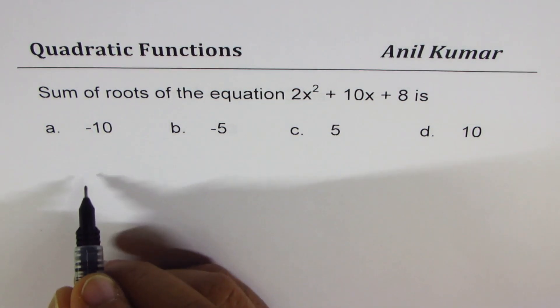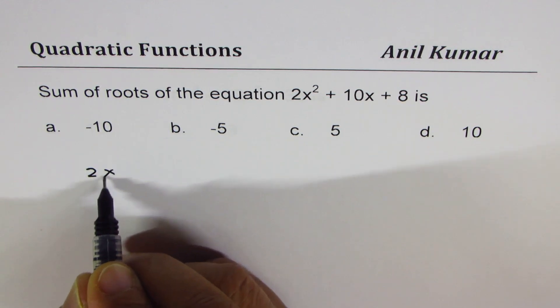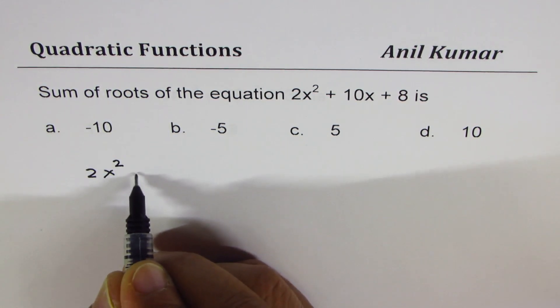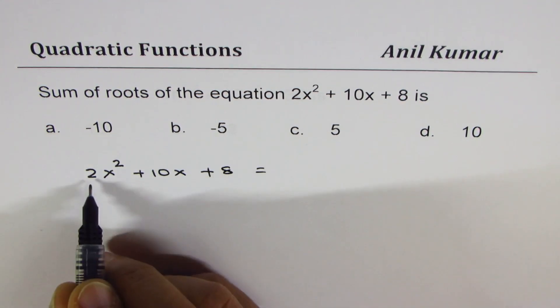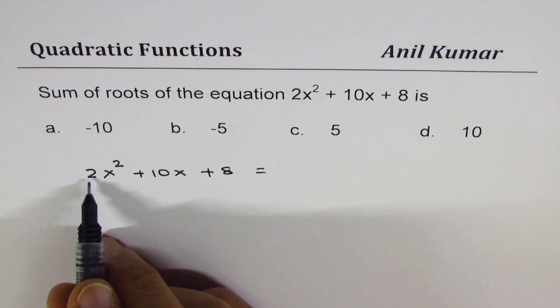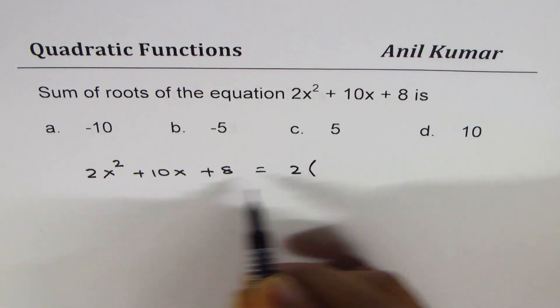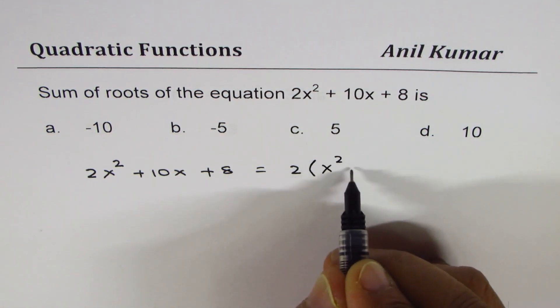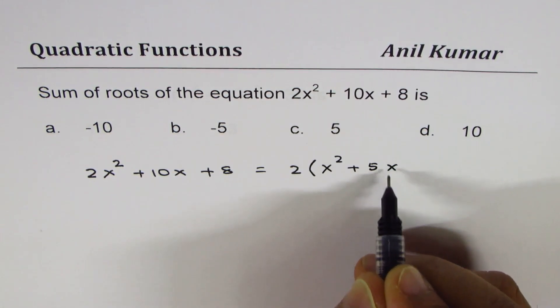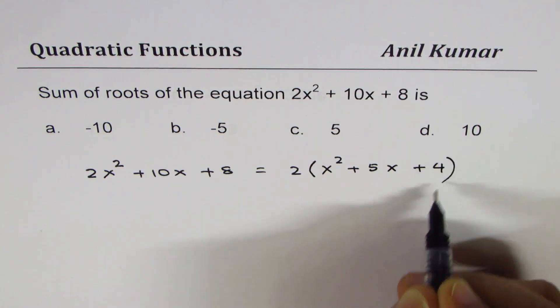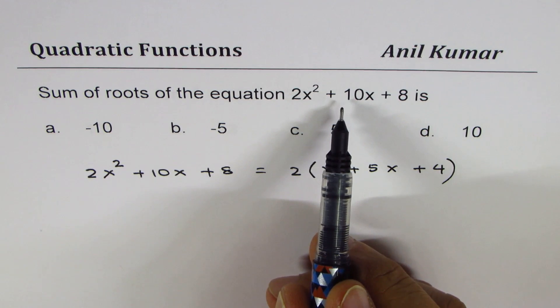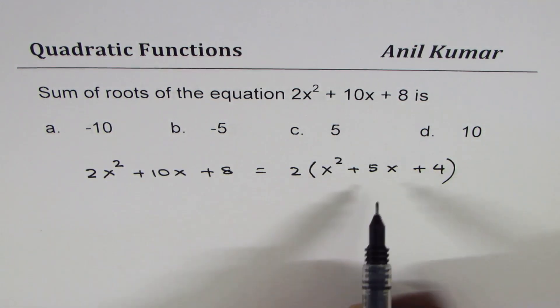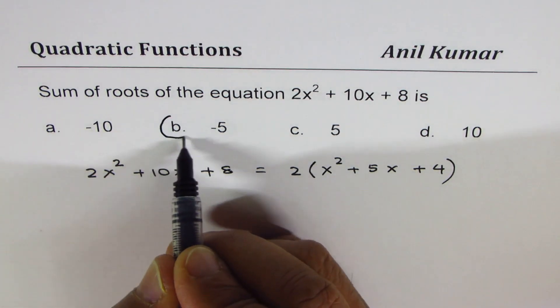Now here the trick is if you observe carefully it is 2x squared plus 10x plus 8. So there is a common factor here which is 2. So I could actually factor this as 2 and then we have x squared plus 5x plus 4. Do you see that? Because of this common factor you may write minus 10 as your answer. However minus 5 is the answer, right.